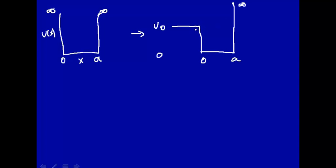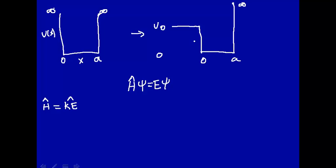This is a different system, so we'll have to write a different Schrödinger equation for it. The Schrödinger equation is H psi equal E psi, and we want to solve it for this potential where it doesn't go to infinity on the left-hand side. Inside the box, the Hamiltonian is just the kinetic energy operator because the potential is 0. Outside the box, the potential is not equal to 0, so we include that potential energy V in the Hamiltonian.